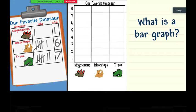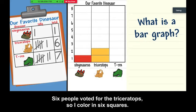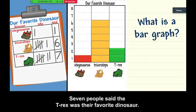Let's see, one student liked the Stegosaurus the best, so I fill in one square. Six people voted for the Triceratops, so I color in six squares. Seven people said the T-Rex was their favorite dinosaur.